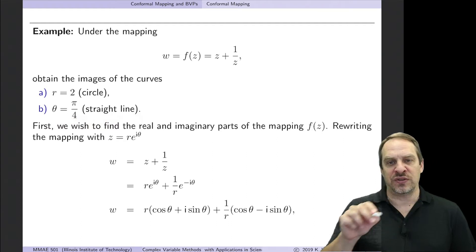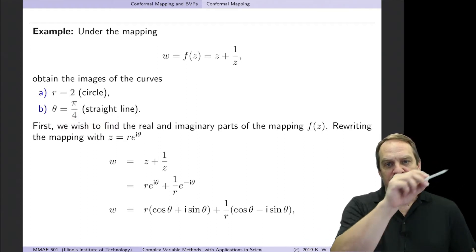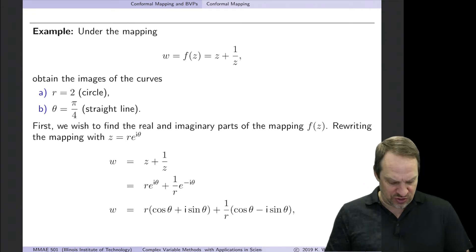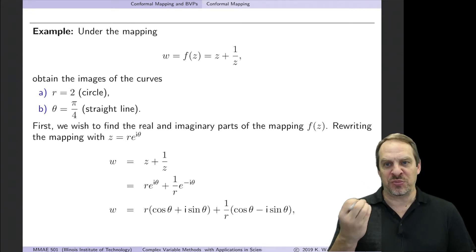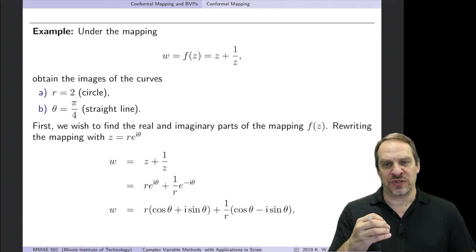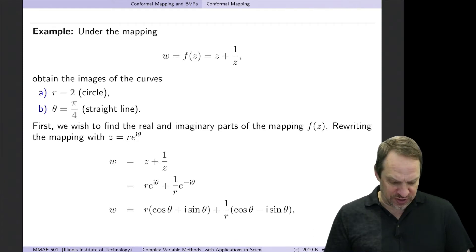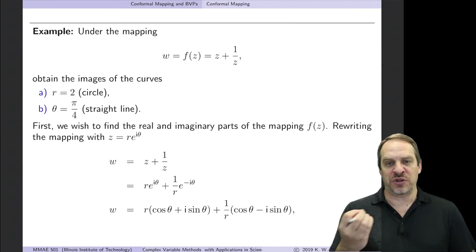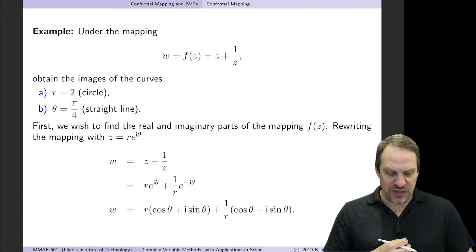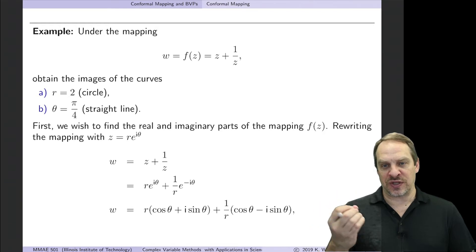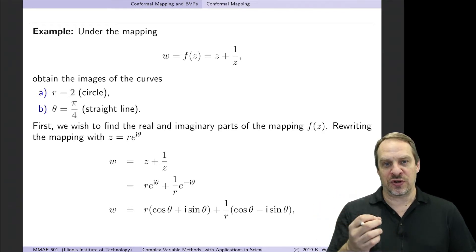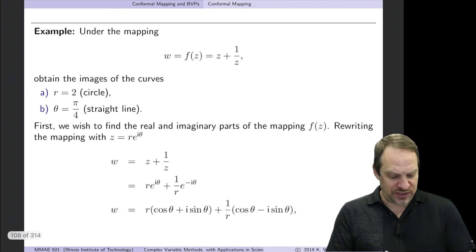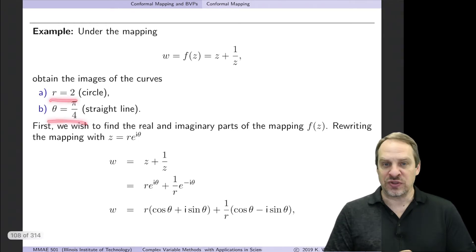In these problems there are pieces that are plug-and-chug — you do the same thing over and over — and pieces that are problem-specific, which I'll clearly point out. The first part is plug-and-chug: find u and v, the real and imaginary parts of the mapping. The only choice is whether to use z = x + iy in Cartesian form or z = re^(iθ) in polar form. Since we're dealing with r's and θ's already, let's use polar form.